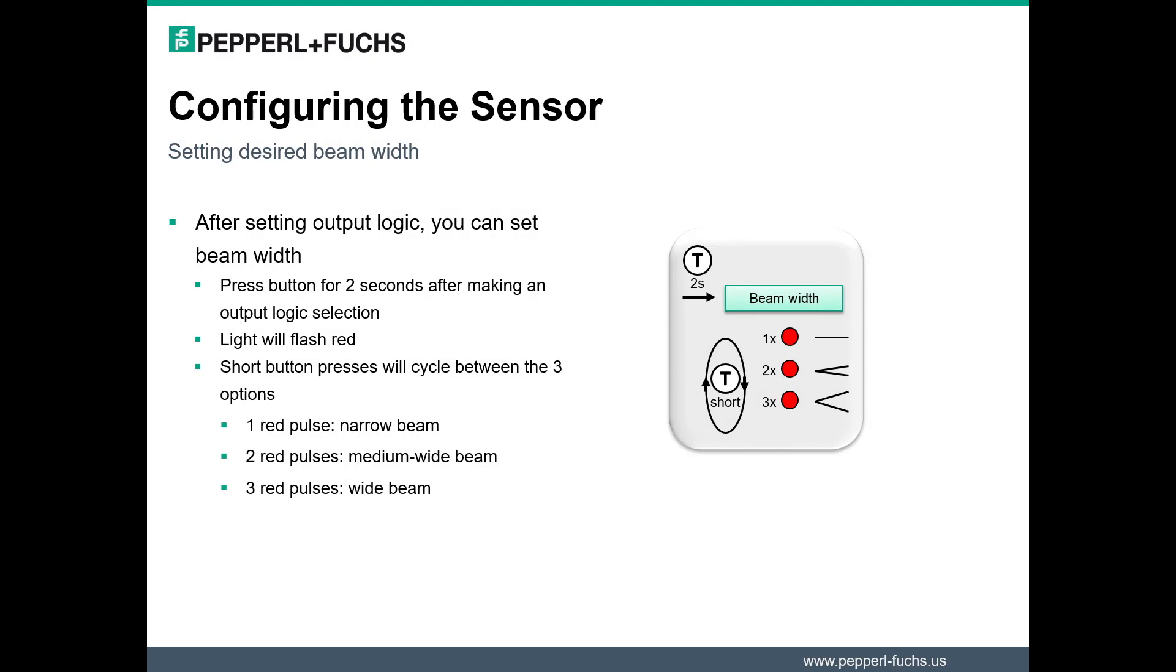Now we can set our desired beam width. To move on to the beam width, push the button for two seconds until it begins to flash red. Once it flashes red, you can cycle between the three different options using short button presses. One flash means a narrow beam, two for the medium, and three for the wide.